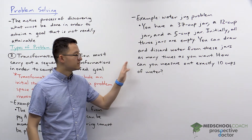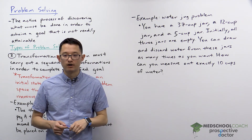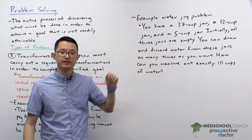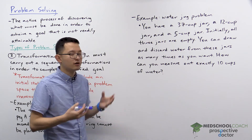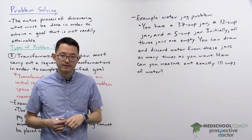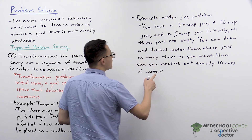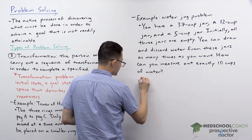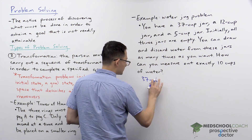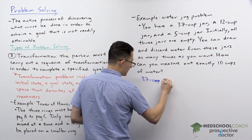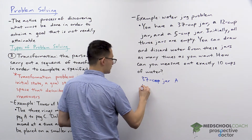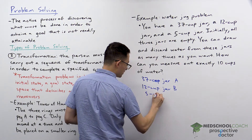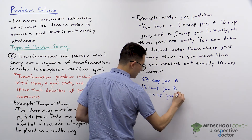What you need to do is measure out exactly 10 cups of water. This is a pretty interesting problem because none of the jars can hold exactly 10 cups of water, so you have to use the jars in some way to get exactly 10 cups. One way you can do this is by representing each jar as a letter. So let's call the 37-cup jar A, the 12-cup jar B, and the 5-cup jar C.